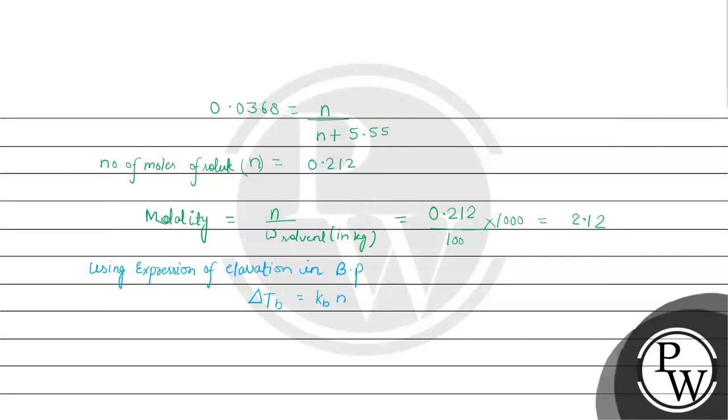The value of Kb is 0.52 and molality is 2.12. Delta Tb will come as 1.1 degrees Celsius, which is the change in boiling point at 100 degrees Celsius.